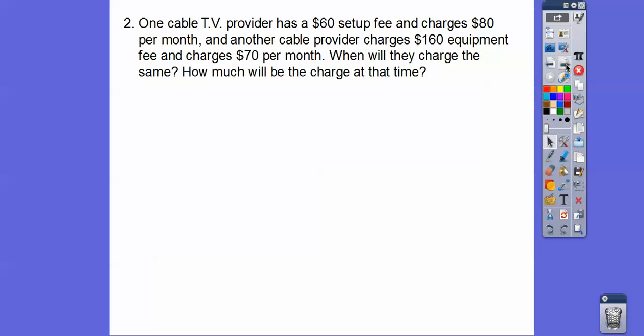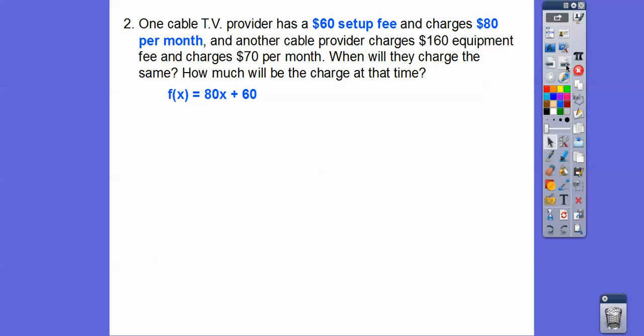Here's another problem. Same setup, you guys. One cable TV provider has a $60 setup fee. There's our b. And it charges $80 per month. There's our m. And another cable company has $160 equipment fee and charges $70 per month. When will the charges be the same? And how much will the charges be?